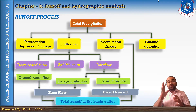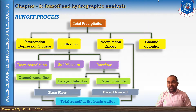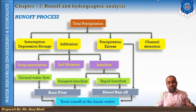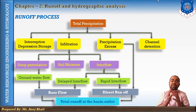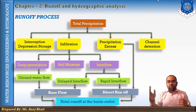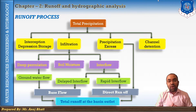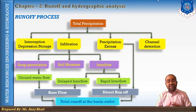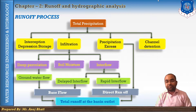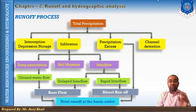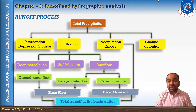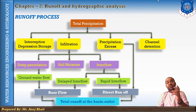When the rain falls, a part of it gets intercepted by vegetation. Some of it is stored as depression on the ground surface — this is known as depression storage — which later infiltrates or gets evaporated. Some amount of rain is also absorbed by the soil.